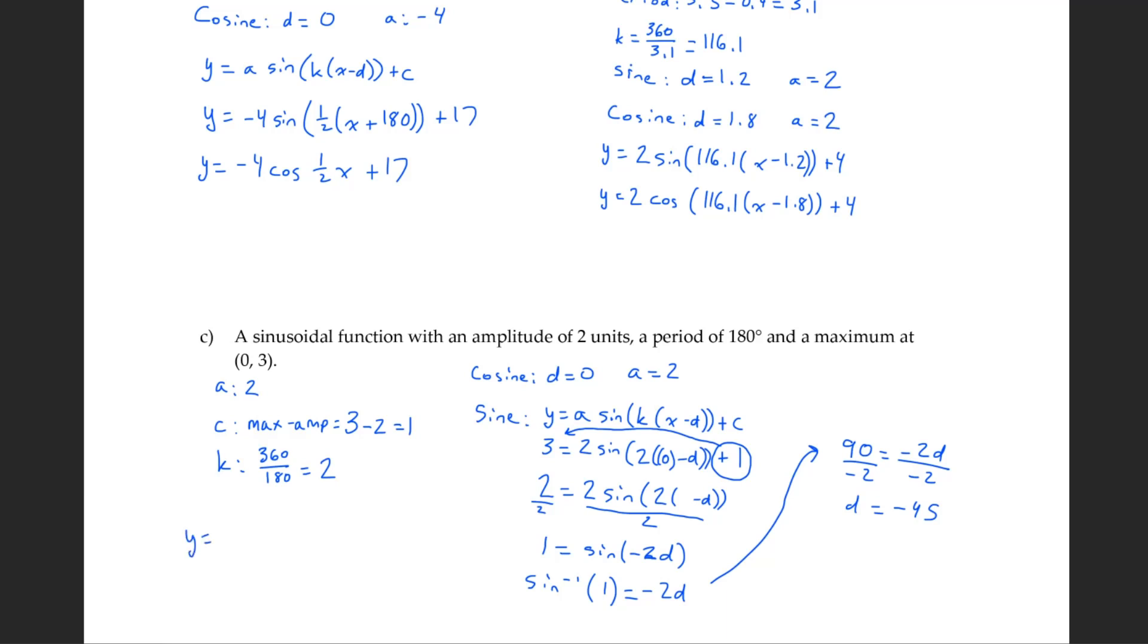So then our two equations, y equals 2 sine bracket 2 bracket x plus 45 bracket bracket plus 1. Or y equals 2 cos, actually we don't even need that bracket because there is no d, 2x plus 1.